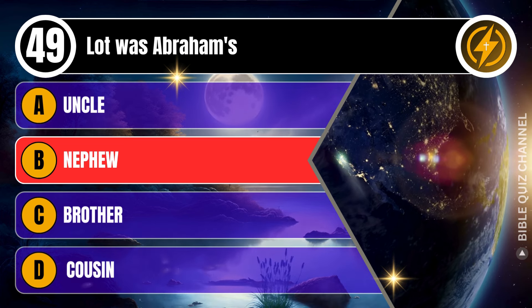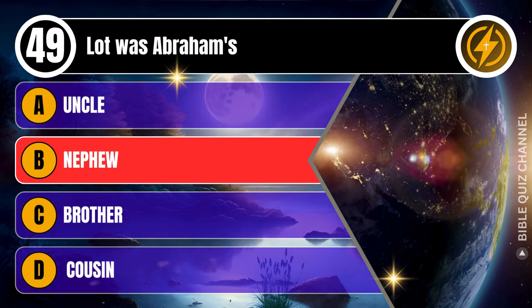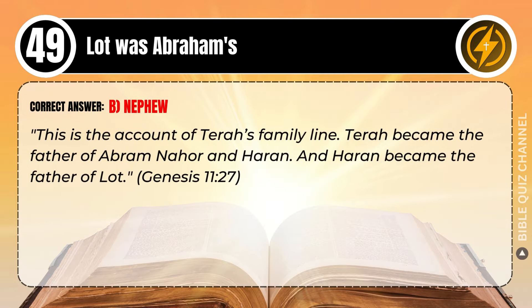Correct answer: B. Nephew. Explaining the Bible — This is the account of Terah's family line. Terah became the father of Abram, Nahor, and Haran, and Haran became the father of Lot. Genesis, chapter 11, verse 27.